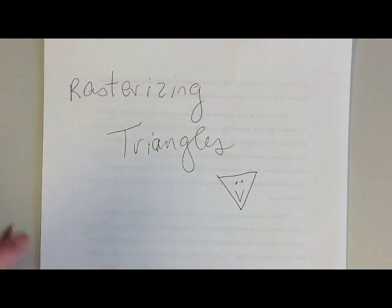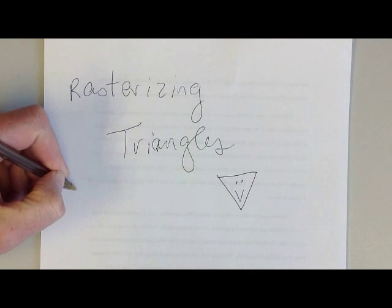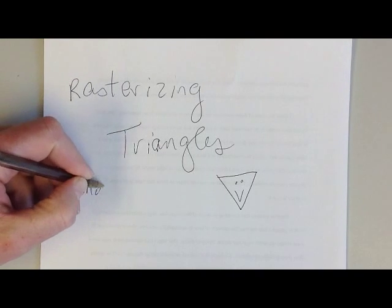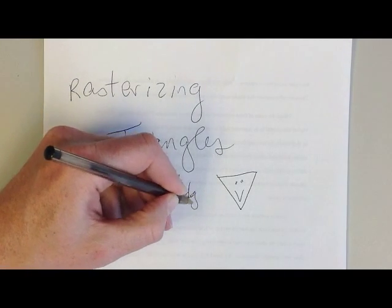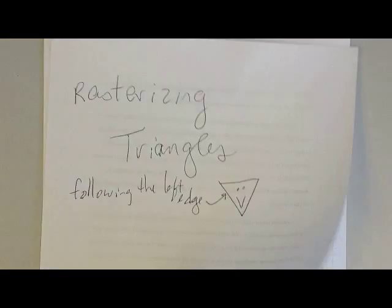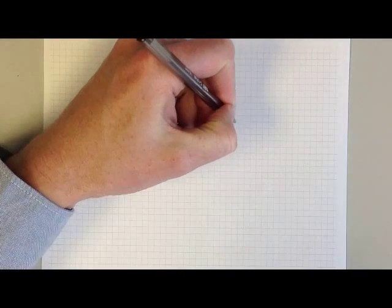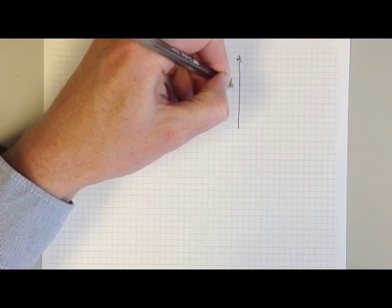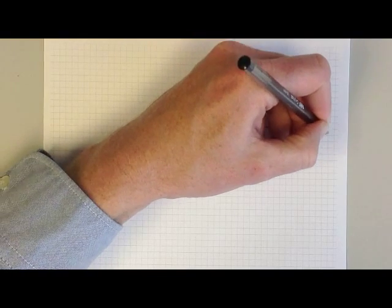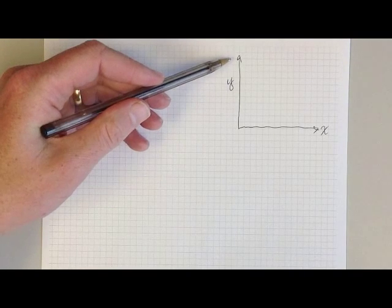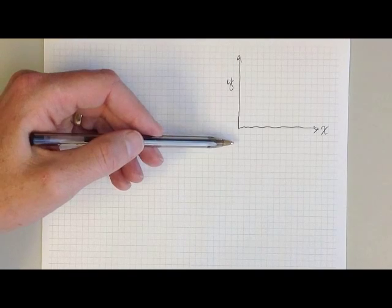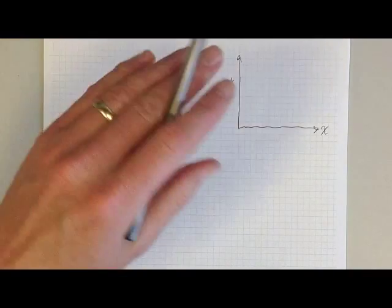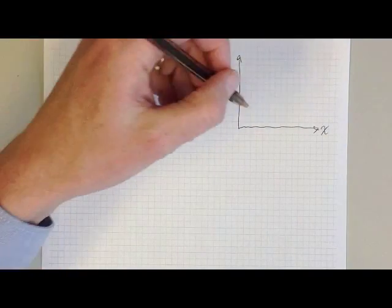So what we're going to do is rasterize a triangle, but this time we're just going to look at following the left edge. Let's pretend we have a triangle in a simple 2D coordinate system. We'll need a Y axis and an X axis. Now note that I've drawn my Y axis with the positive direction going up. In some graphics packages, positive Y actually points down. So if your image appears to be flipped upside down, Y probably went the other way.